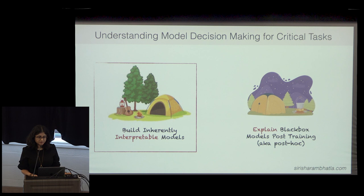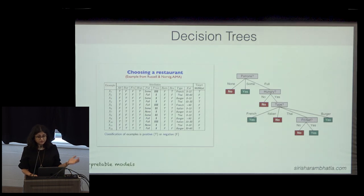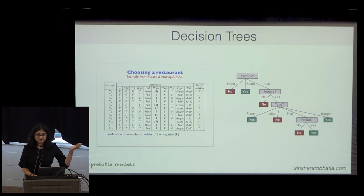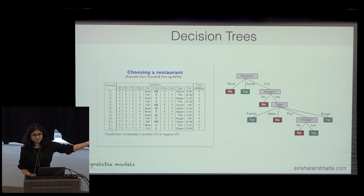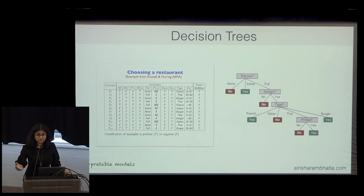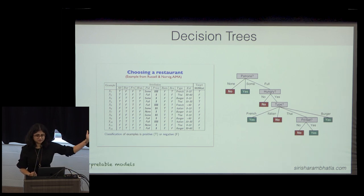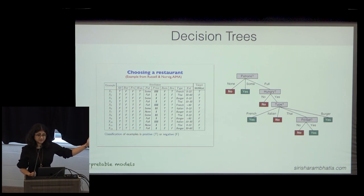Decision trees are a mainstay in healthcare — clinicians love them because you simply traverse down the tree to make a decision, and you know exactly how the model arrived at it. If someone asks why they were classified a certain way, you can explain precisely. This also makes decision trees popular in the financial sector, where there are obligations to investors. This is what an inherently interpretable model looks like — exactly what you see is what you get.